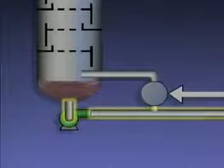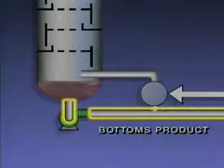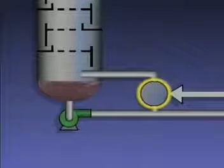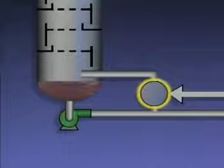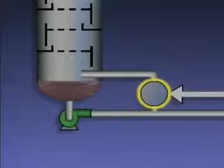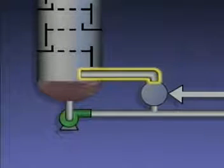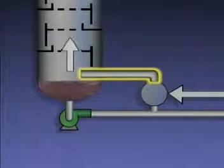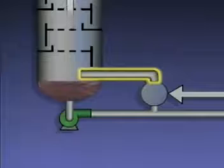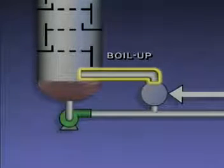Some of this liquid is drawn off as the bottoms product, and some of it is routed to a device called a reboiler, which is connected to the bottom of the tower. The reboiler is usually a heat exchanger designed to vaporize the lighter components that remain in the liquid from the bottom of the tower. Vapors from the reboiler — or in some cases a mixture of vapors and liquid — re-enter the tower and rise upward. These vapors and the heat they contain are often referred to as boil-up.